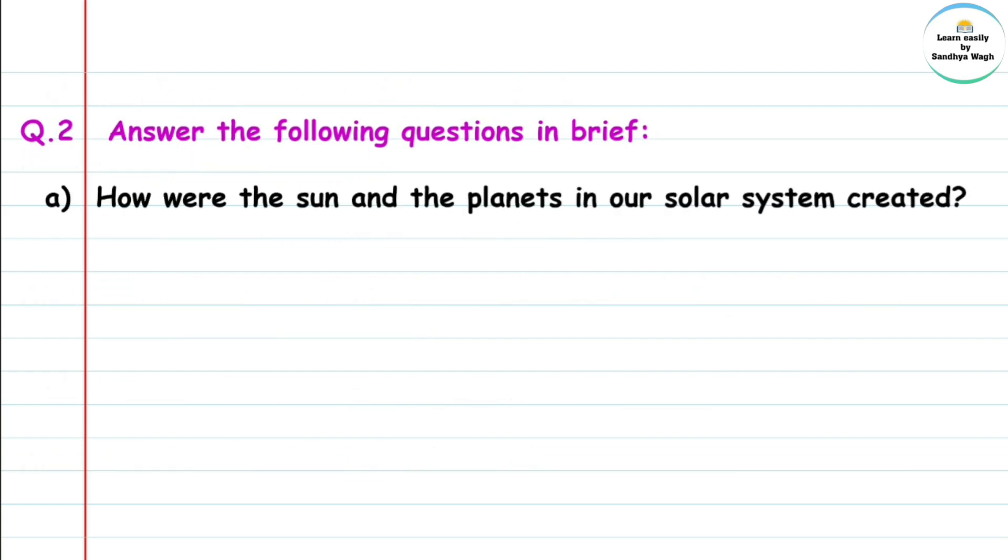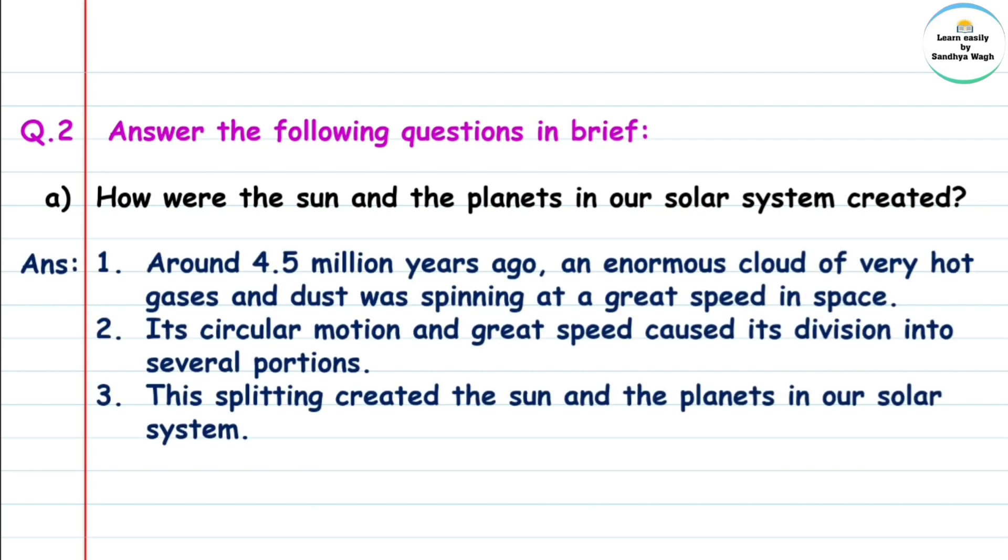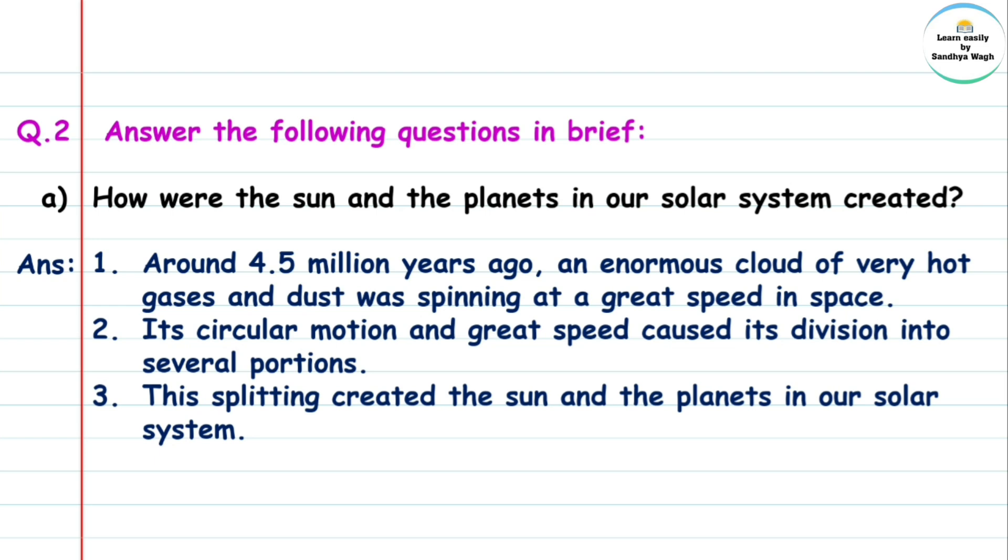Question 2: Answer the following questions in brief. Part a: How were the sun and planets in our solar system created? Around 4.5 million years ago, an enormous cloud of very hot gases and dust was spinning at a great speed in space.